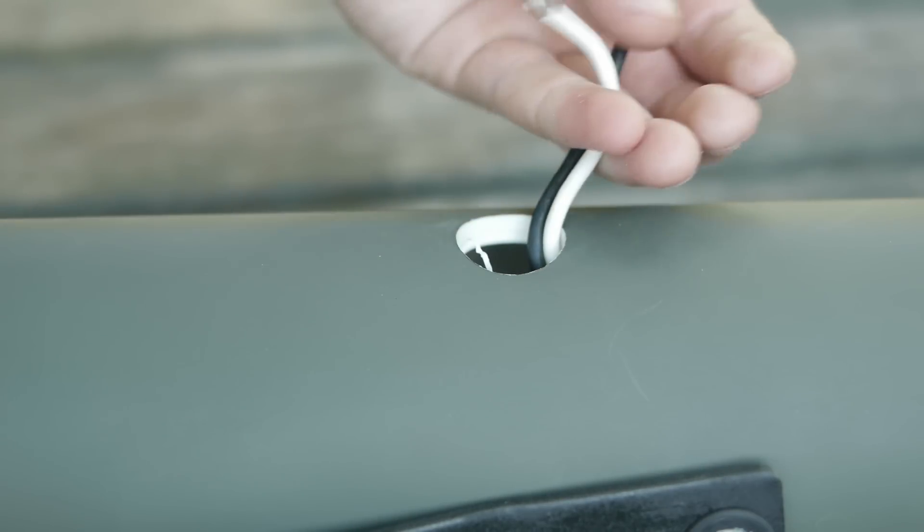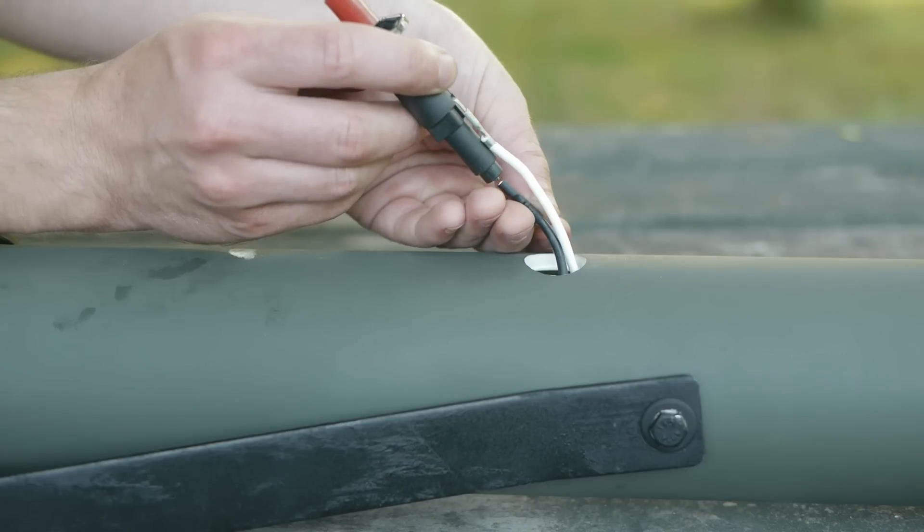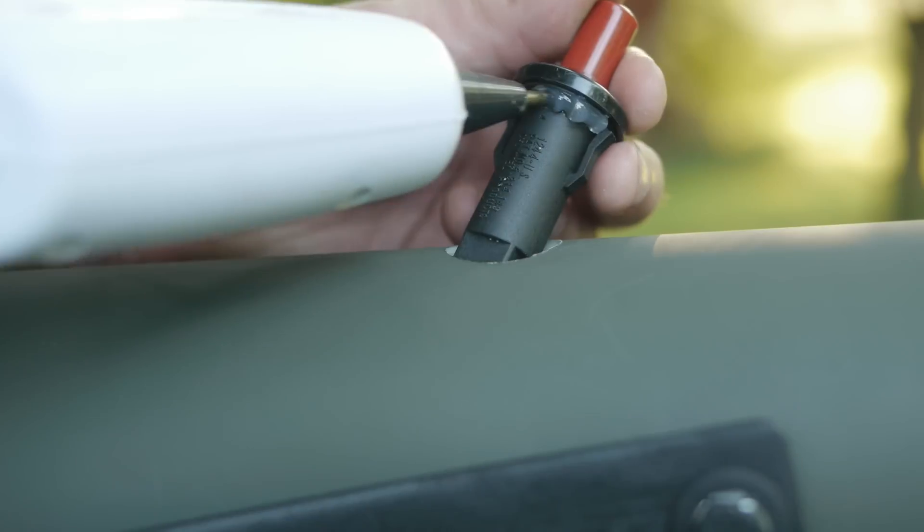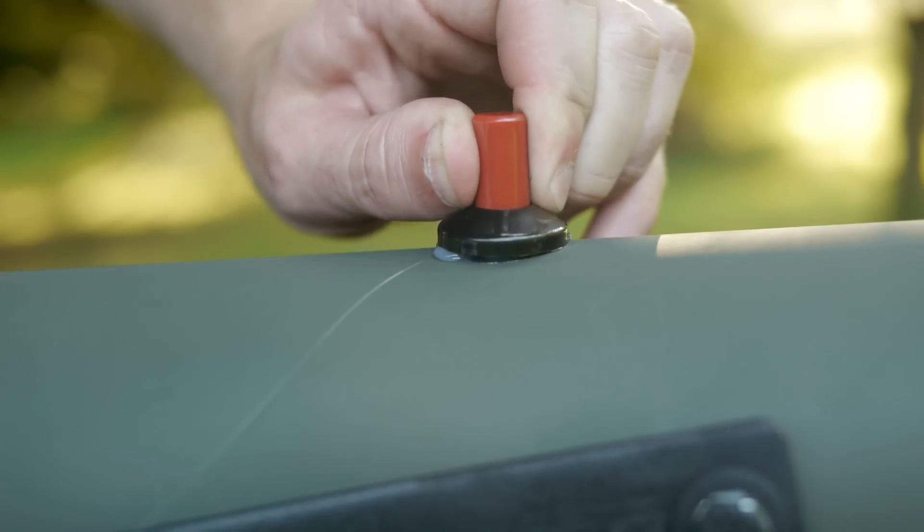The wires are then fished out of the hole made for the igniter, so that they can be reattached. Some hot glue holds the button in place, completing this project.